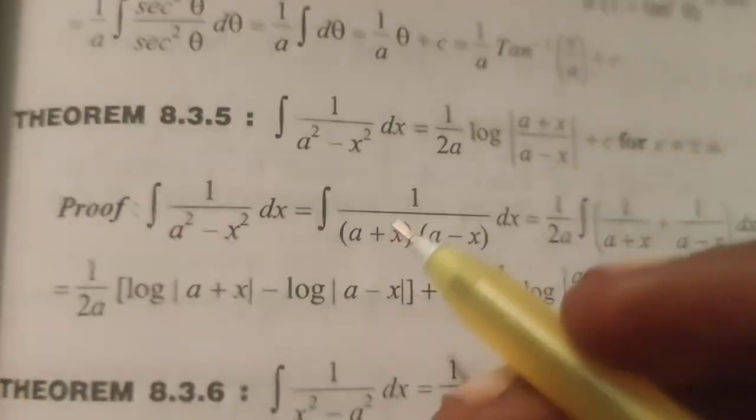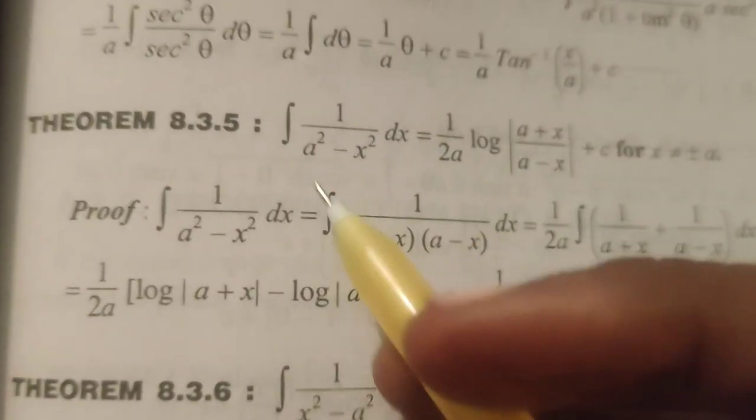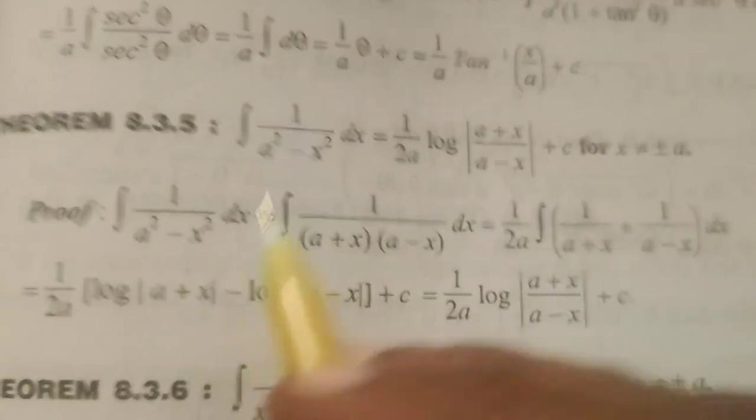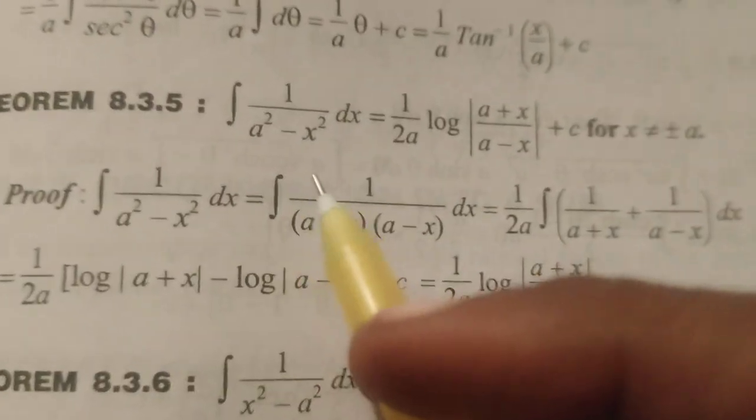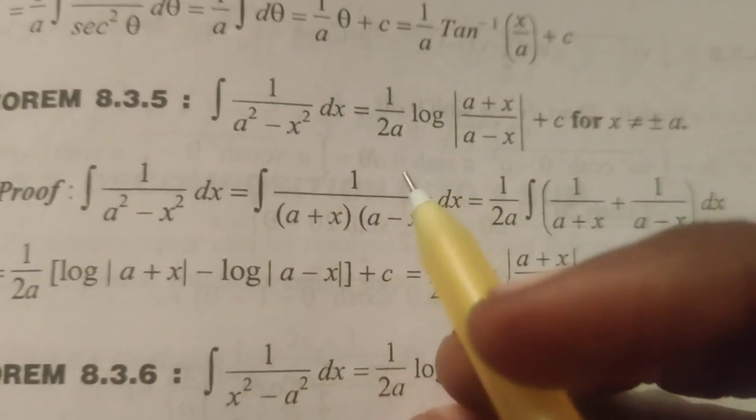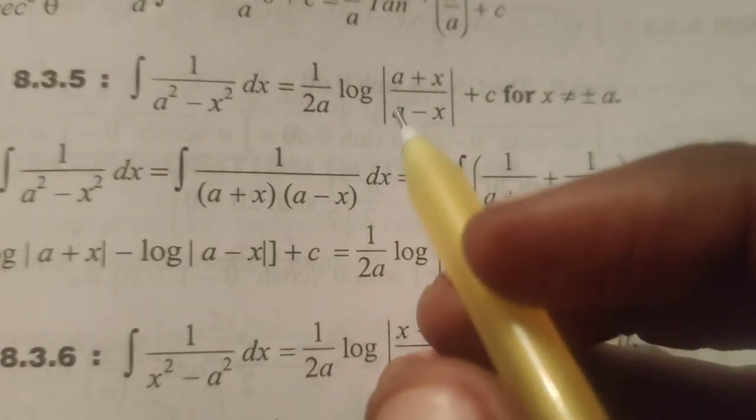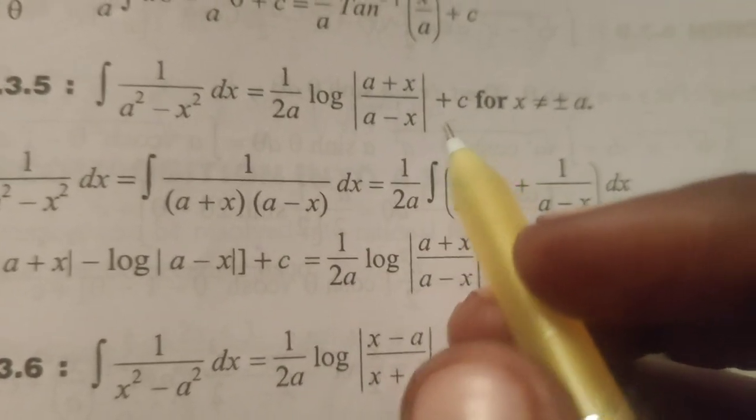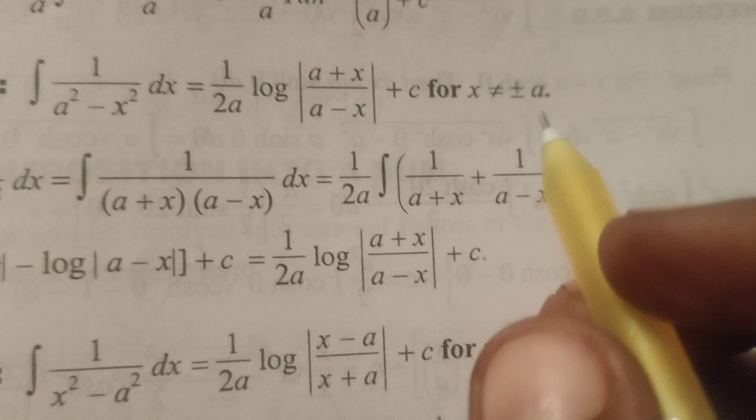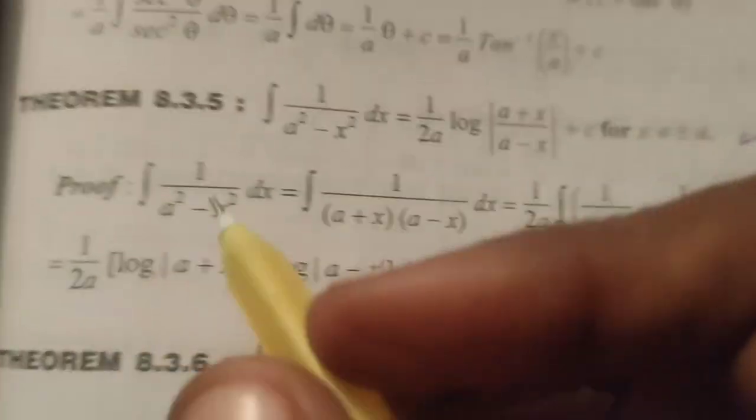Given, this is Dr. A.T. Now today we are going to explain and prove the result of the integral 1 by a square minus x square dx equals to 1 by 2a log of module a plus x by a minus x plus c for x is not equals to plus or minus a.